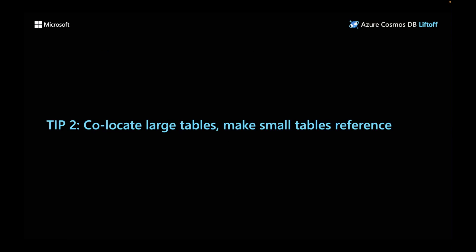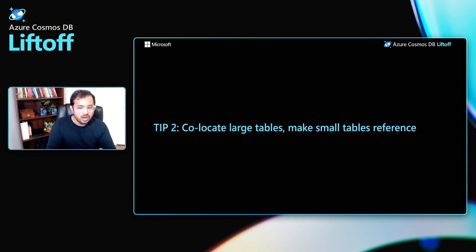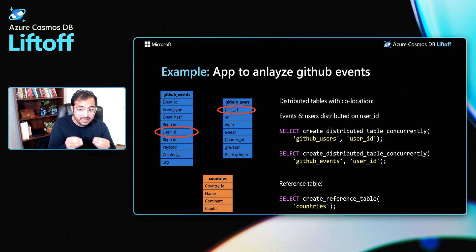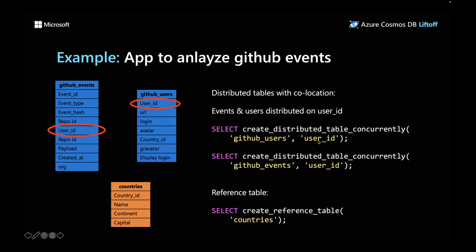Tip two: collocate large tables and make small tables reference tables. In the GitHub events example, the events and users tables are the larger tables storing application-specific data. To collocate them, I distribute both on user ID using create distributed table concurrently with user ID as the distribution column for both tables. The countries table is a smaller dimension table shared across users, so I make it a reference table. In Azure Cosmos DB for Postgres, a reference table is replicated across all nodes.